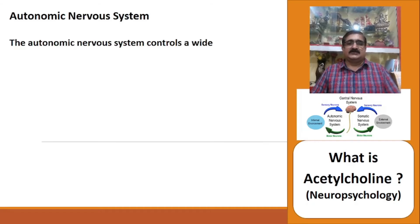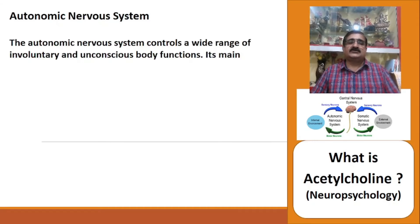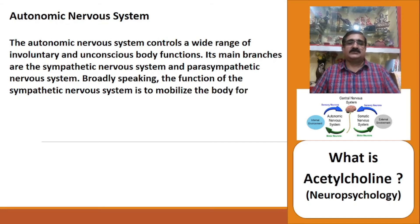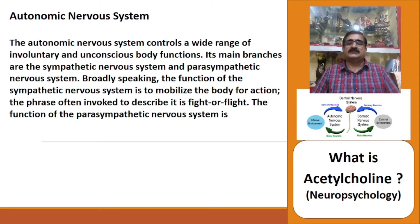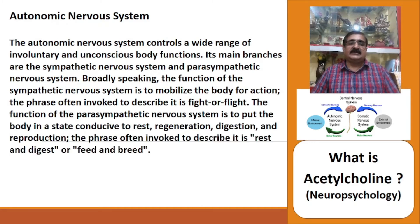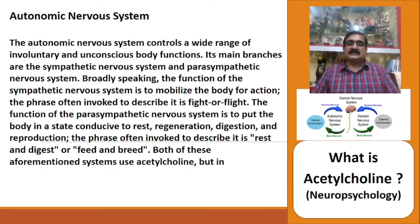In the autonomic nervous system, which controls a wide range of involuntary and unconscious body functions, the main branches are the sympathetic and parasympathetic nervous systems. Broadly, the sympathetic nervous system mobilizes the body for action — often described as 'fight or flight.' The parasympathetic nervous system puts the body in a state conducive to rest, regeneration, digestion, and reproduction — often described as 'rest and digest' or 'feed and breed.'